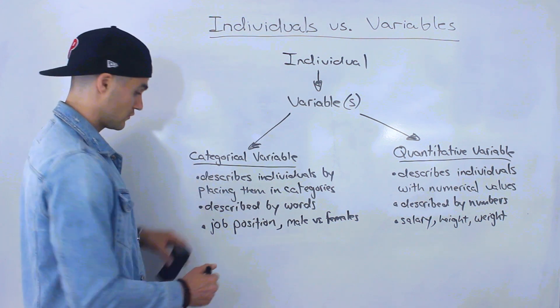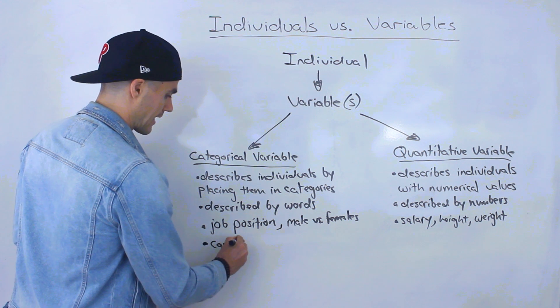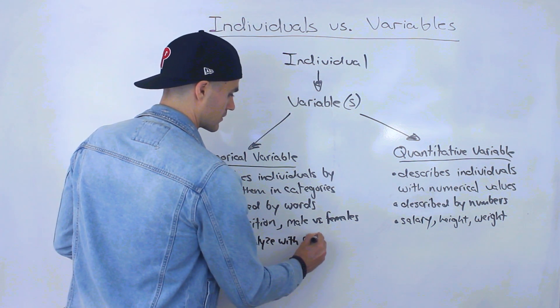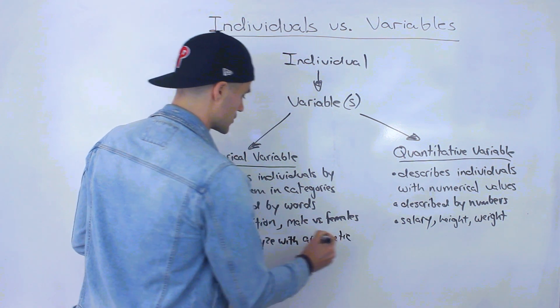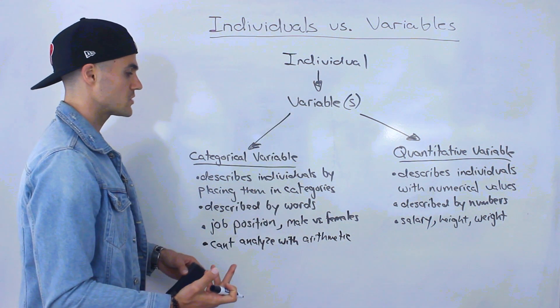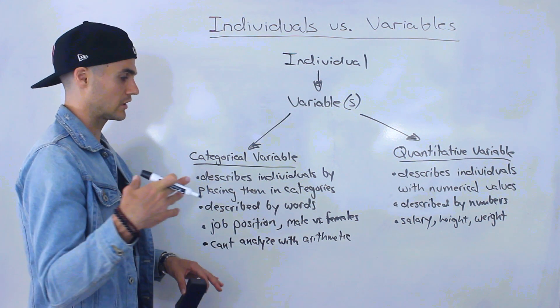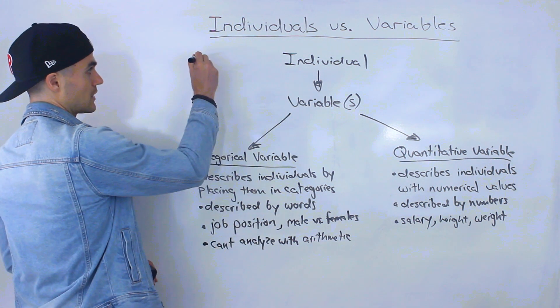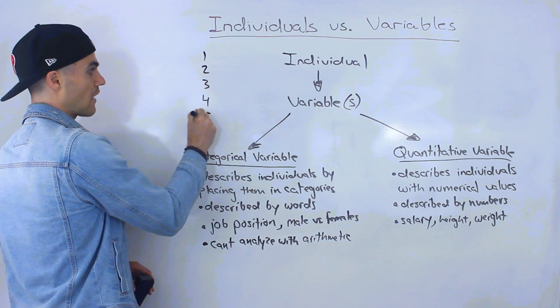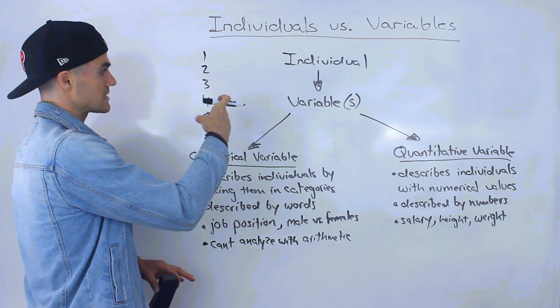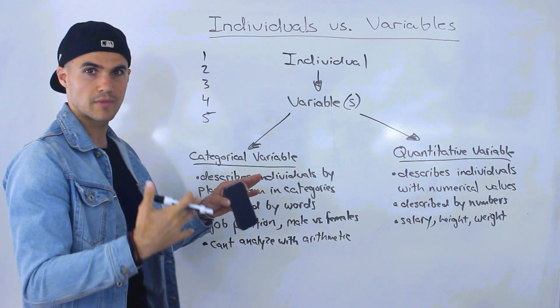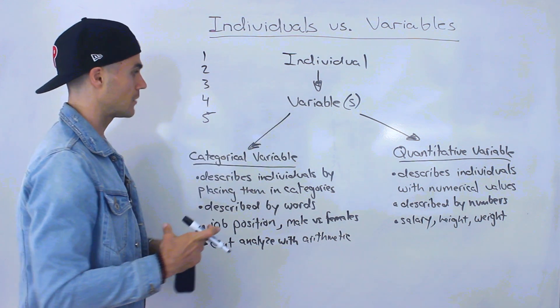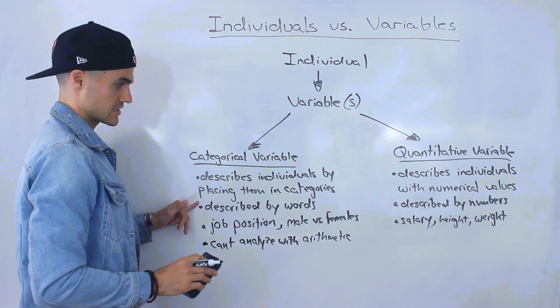Now usually with categorical variables, you can't analyze these with arithmetic. That makes sense because usually they're described by words. Sometimes you can. So for example, let's say in that previous company we were looking at, let's say there are only five different types of job positions. So we can categorize each job position with a number. So one, two, three, four, five. And then what we can do is we can total up how many of these numbers occur each time. And then we can look at the proportions maybe, like what's the percentage of analysts compared to the whole company, stuff like that. But usually everything's described by words.